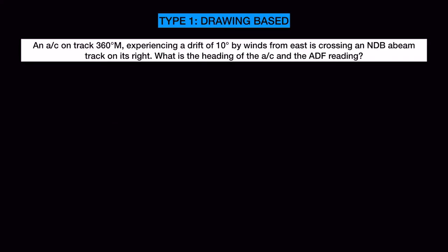The first type of questions are drawing-based and can be solved if you properly draw what is given in the question. Here's an example: an aircraft on track 360 degrees magnetic, experiencing a drift of 10 degrees due to winds from the east, is crossing an NDB abeam the track on its right. What is the heading of the aircraft and the ADF reading?